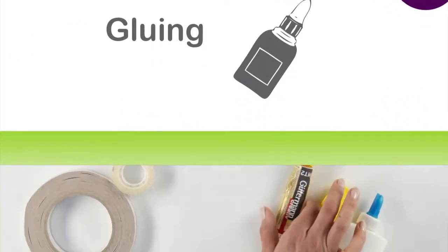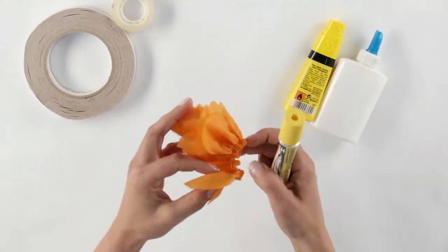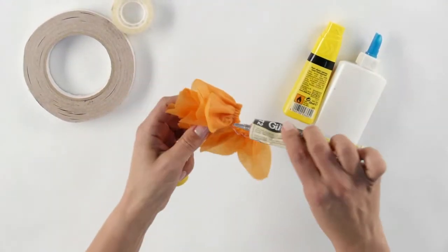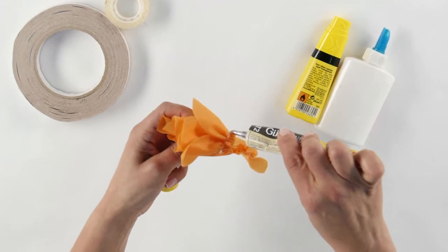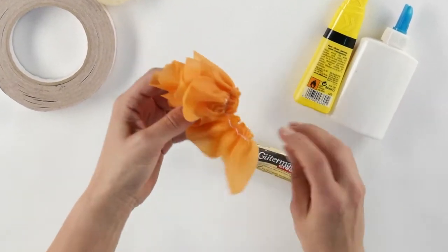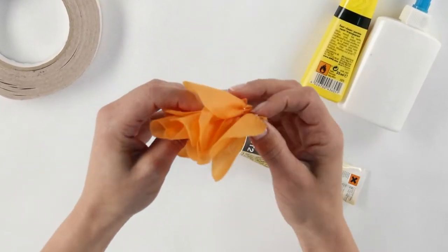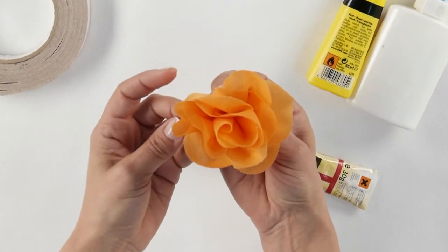Gluing. All sorts of adhesives work on SmartFab, except for hot glue. Drying times will vary, depending on the glue you choose. For the strongest, fastest drying results, we recommend using fabric glue.